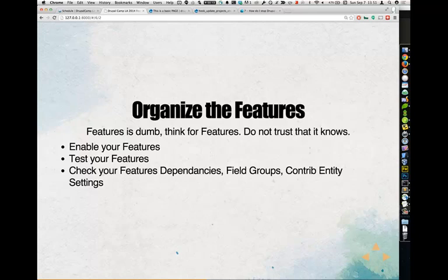Things you really need to manually check: field groups — always manually check your field groups. Don't rely on Features knowing what your field groups are, and check your field instances inside those groups. Contributed entity settings are also an issue — for field settings inside entities such as auto_nodetitle, you can't trust that stuff is being stored anywhere, because every module developer puts that stuff wherever they want. They don't necessarily implement APIs the way Drupal expects. Build your feature, test it. If the settings are in there, great. If not, look at that module, find where it stores things in code — typically it'll end up in a variable, so you'll need StrongArm.